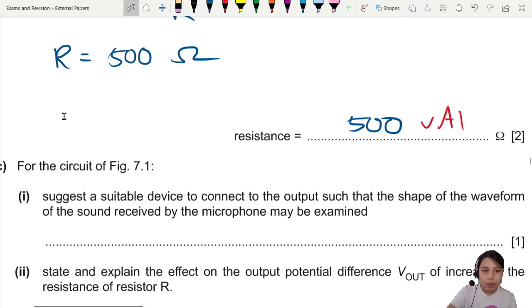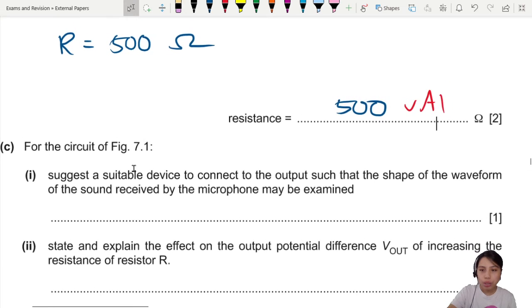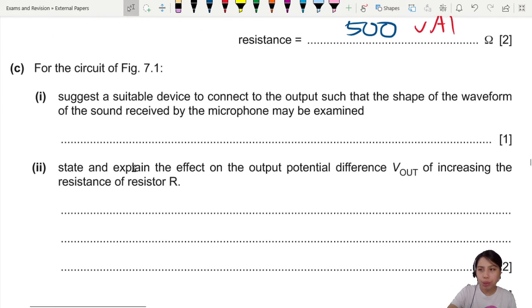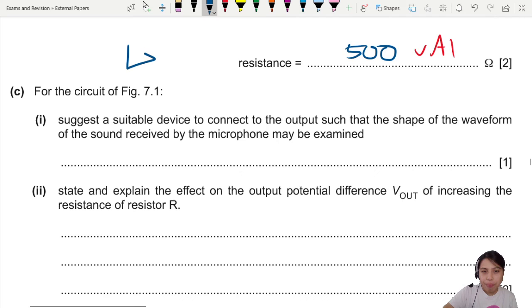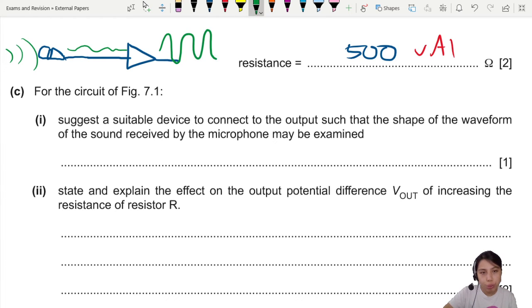The one in the box. And of course, your final answer, one more mark. Alright. For the circuit of 7.1 shown earlier, suggest a device to connect the output so that the sound received by the microphone may be examined. Huh? Why would you want to? Okay. How? Okay, so we try to simplify the diagram a bit. You have an op-amp. I'm going to simplify the drawing. Connected to a microphone. How to draw a microphone? Like that. So the microphone will receive some kind of sound. Convert that to an electrical signal. And you can send it out.